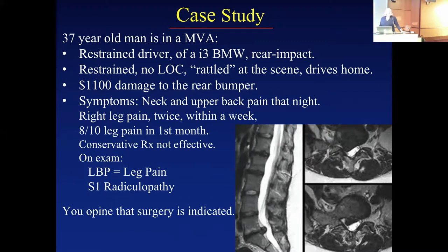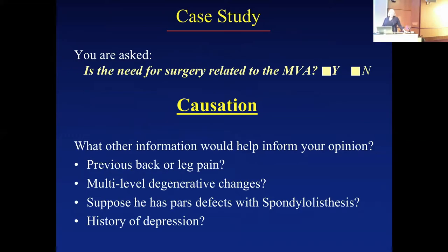That evening he felt neck and upper back pain. Within a week, he had two events where he felt pain running down his right leg. Within a month, he had eight out of ten right leg pain and low back pain. He failed many conservative therapies — all the appropriate therapies — and he comes to your office. On examination, he has leg pain that equals back pain, and clinically he has an S1 radiculopathy on the right. His MRI is concordant with his symptoms.